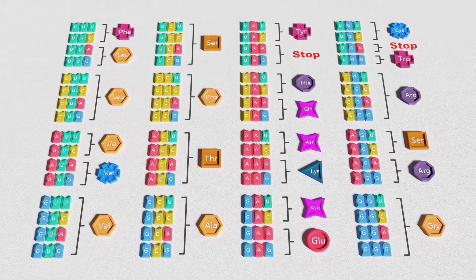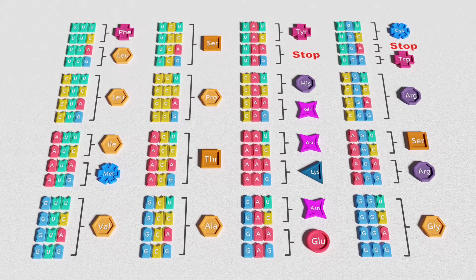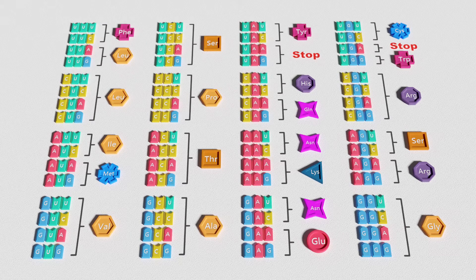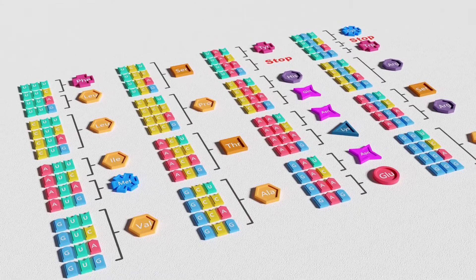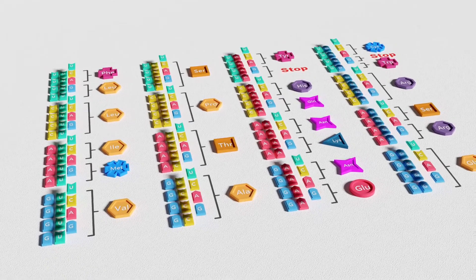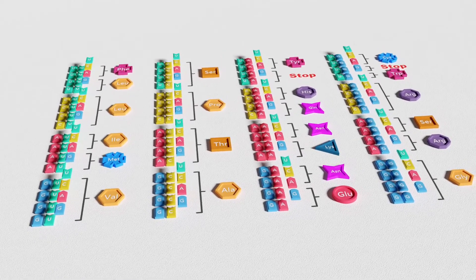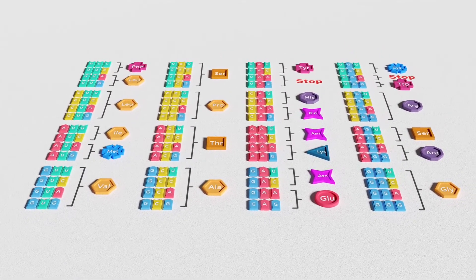This rendered much of the genetic code redundant, similar to how multiple words in the English language have the same meaning. This redundancy was not random either, as synonymous codons only varied in their last nucleotide and followed three main patterns of redundancy.